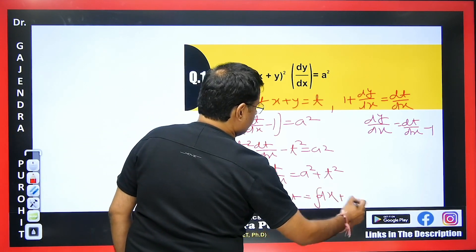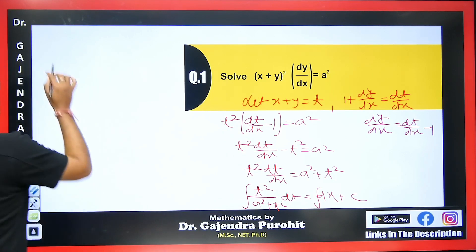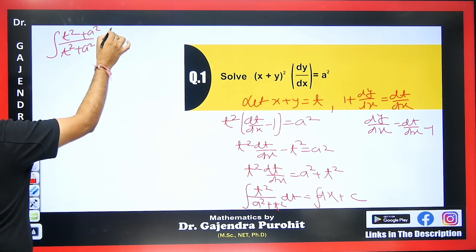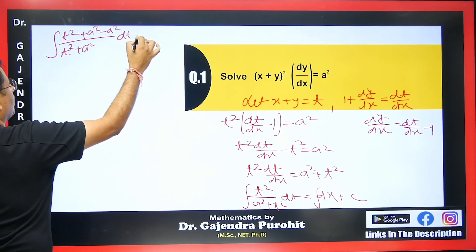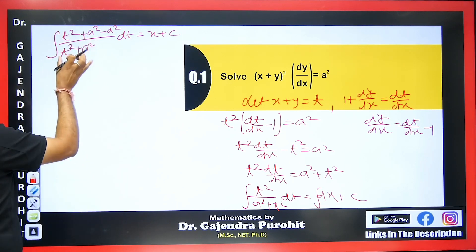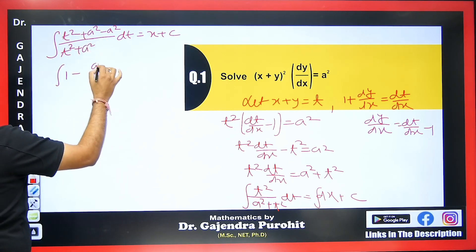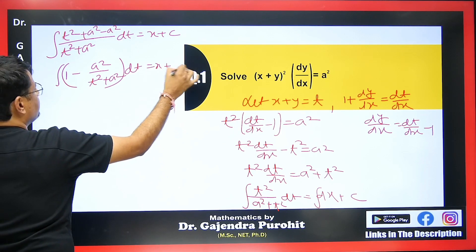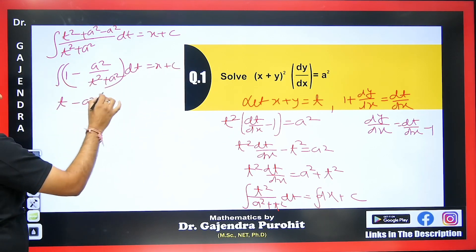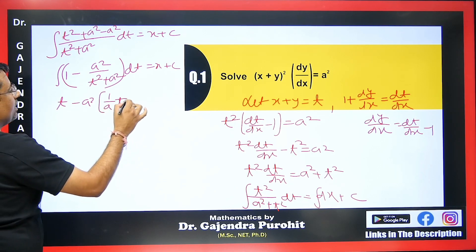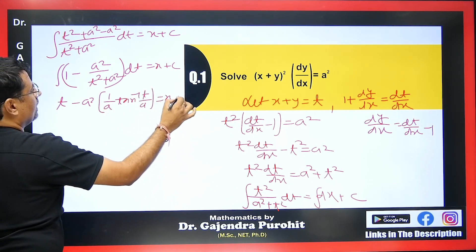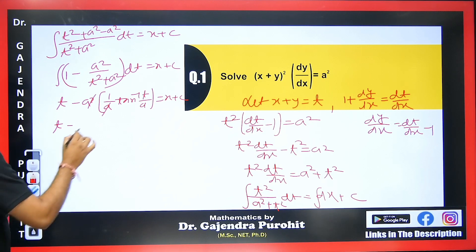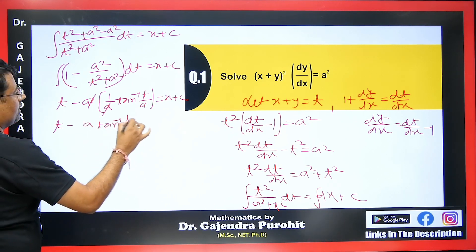Now we integrate. Since we have t²/(t² + a²), we add and subtract a² in the numerator: (t² + a² − a²)/(t² + a²) dt = dx. Splitting: ∫(1 − a²/(t² + a²)) dt = x + c. The integration of 1 gives t, and the integration of a²/(t² + a²) gives a · tan⁻¹(t/a). Simplifying, we get t − a · tan⁻¹(t/a) = x + c.